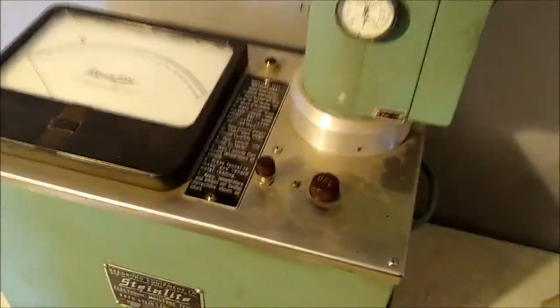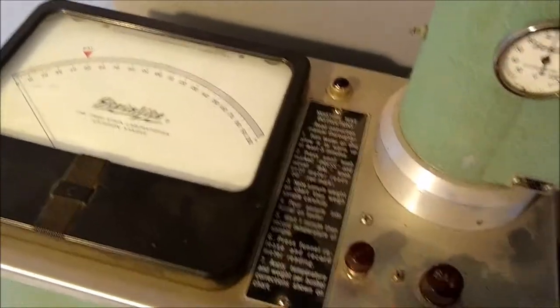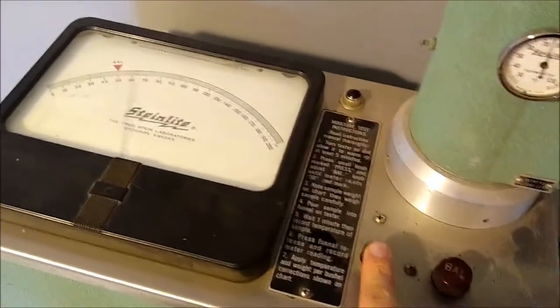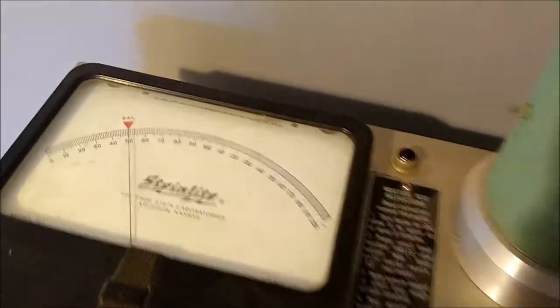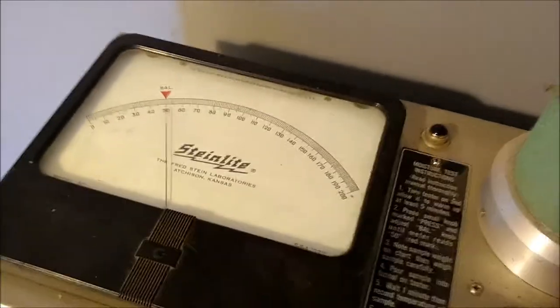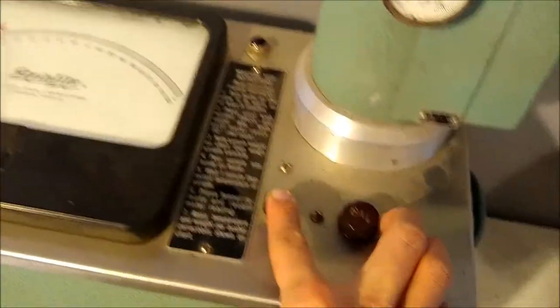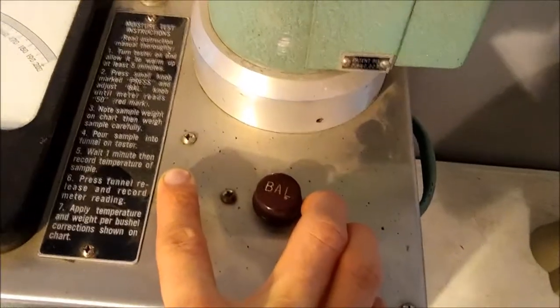We start by checking to see that the unit is balanced by pressing this button. You can see that it points to the red arrow. If it were not pointing to the red arrow, you can adjust it with your balance dial here.